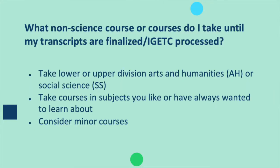A frequently asked question is: what non-science courses do I take until my transcripts are finalized or my IGETC is processed? The college recommends taking lower or upper division arts and humanities or social science courses, taking courses in subjects you like or have always wanted to learn about, or considering minor courses.